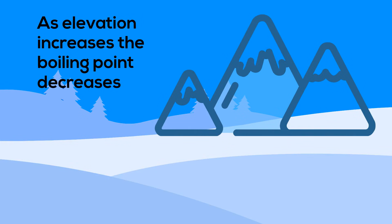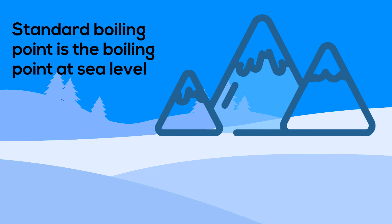Boiling point also varies according to your elevation. It is higher at sea level and decreases as you gain elevation. As a result, the standard boiling point has been defined as the temperature at which boiling occurs under a pressure of one bar, which is a fancy way of saying the standard boiling point is the boiling point at sea level.